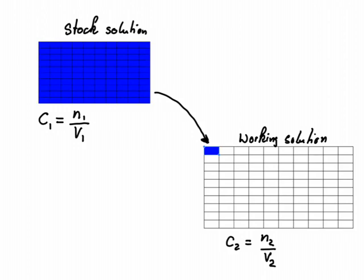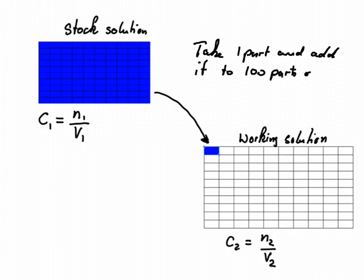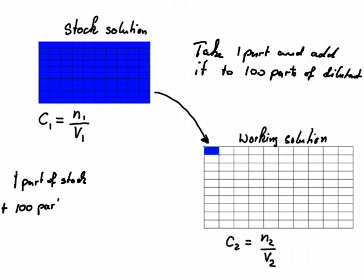The situation would be different if we instead say: take one part and add it to 100 parts of diluant. Because what we would then have is one part of stock plus 100 parts of diluant, giving us a total volume of 101 parts.